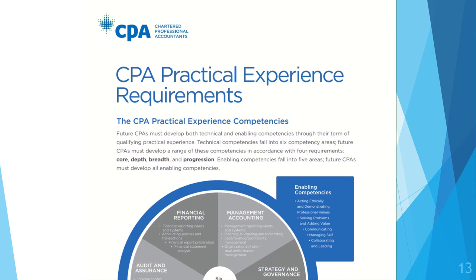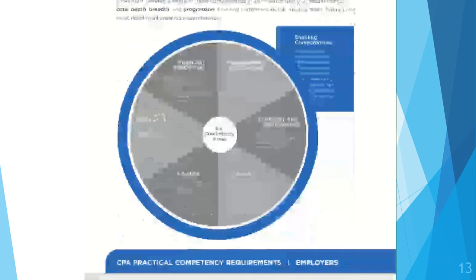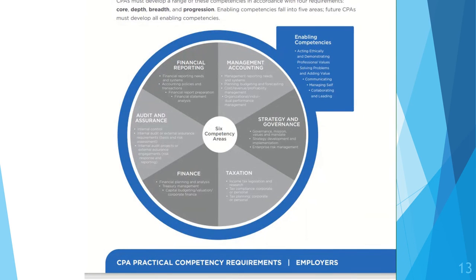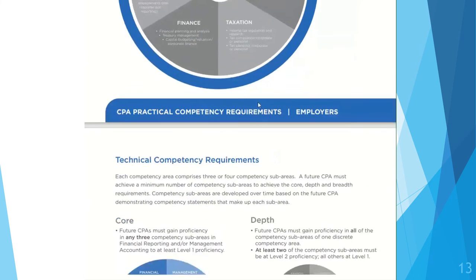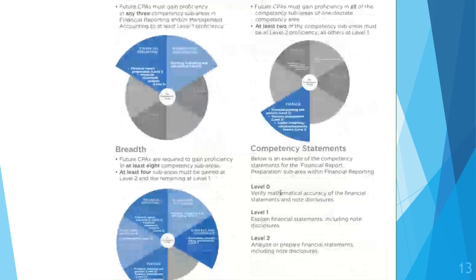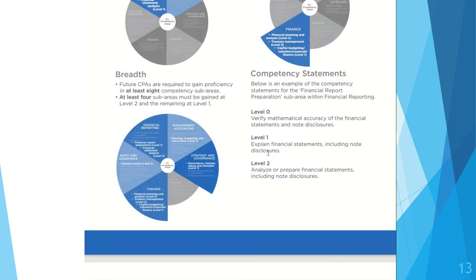Now let's look at the CPA practical experience requirements. You have to be able to develop the six competency areas to become a CPA, achieving a level 0, level 1, or level 2 in those areas. Level 0 means you basically didn't do anything — for example, you just added some numbers without any analysis or explanation. Level 1 means you explained some of what you're doing and put some thought into it. Level 2 means you actually did the task yourself: you analyzed it, explained it, and put it together. That's the level we want to get you to.